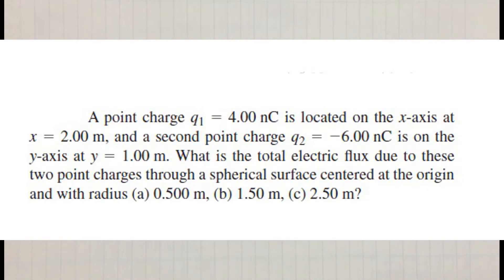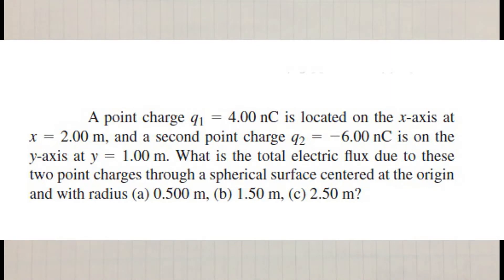A point charge Q1 equal to 4 nanocoulombs is located on the x-axis at x = 2 meters, and a second point charge Q2 equal to minus 6 nanocoulombs is on the y-axis at y = 1 meter. What is the total electric flux due to these two point charges through a spherical surface centered at the origin with radius A = 0.5 meter, B = 1.5 meter, and C = 2.5 meter?